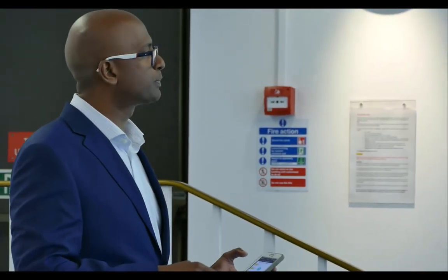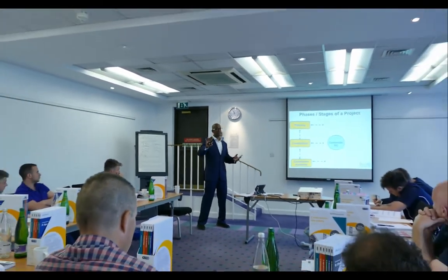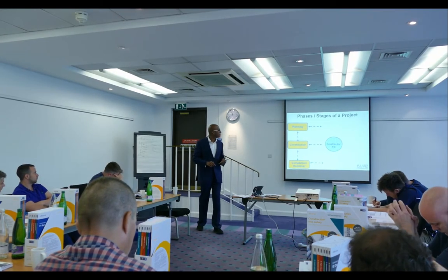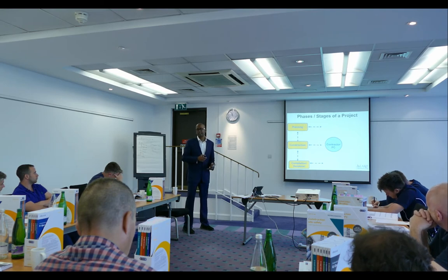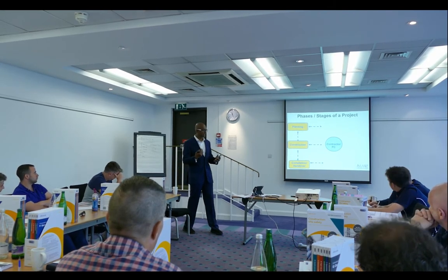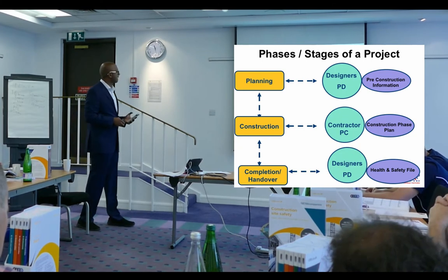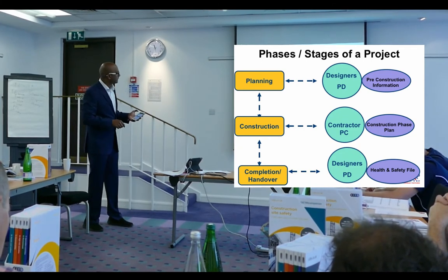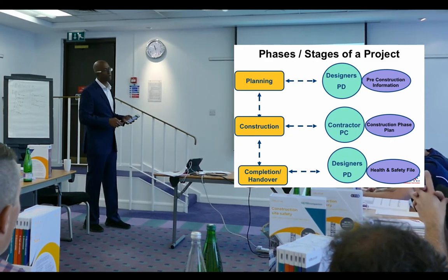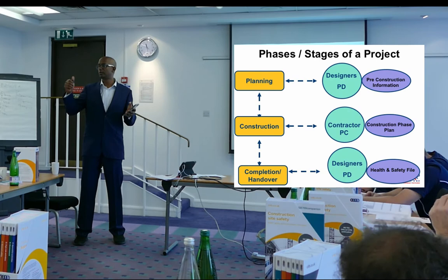Who is responsible for the planning stage? The designer — anyone involved in the planning stage. The chief is the principal designer. Likewise, the completion phase is still under the designer or principal designer. So the only thing in the construction phase is a contractor; the first and last phases belong to the designer. There are three key documents at each of these phases. The planning stage document is the pre-construction information.